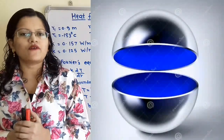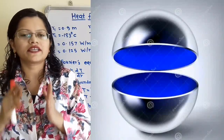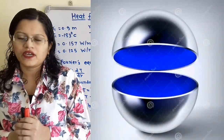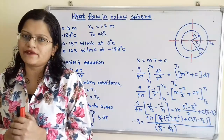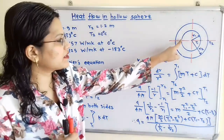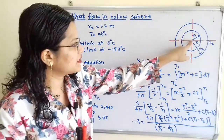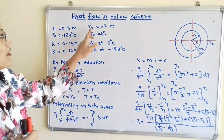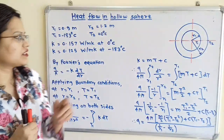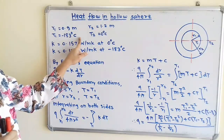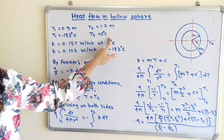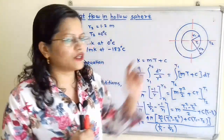This is the case of a hollow sphere and heat flow is taking place in the radial direction. We will first draw the diagram as per the given data. R1 is 0.9 meter (inside surface radius) and R2 is 1.2 meter (outside surface radius). Temperature at the inside surface T1 is minus 183 degree Celsius and temperature at the outside surface T2 is 0 degree Celsius.